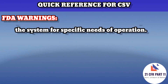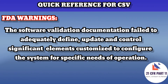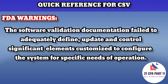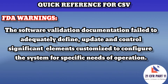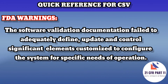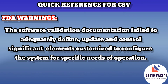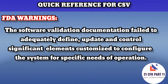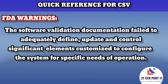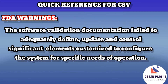Another FDA warning says that the software validation documentation failed to adequately define, update, and control significant elements customized to configure the system for the specific needs of operation. In this warning, the definition, update, and control of configuration settings not required by the computer system validation SOP was spotted. The suggestion is that you must define, update, and control configuration settings for that specific system.